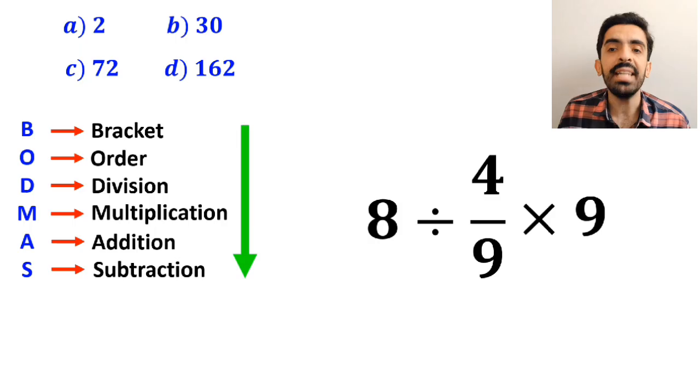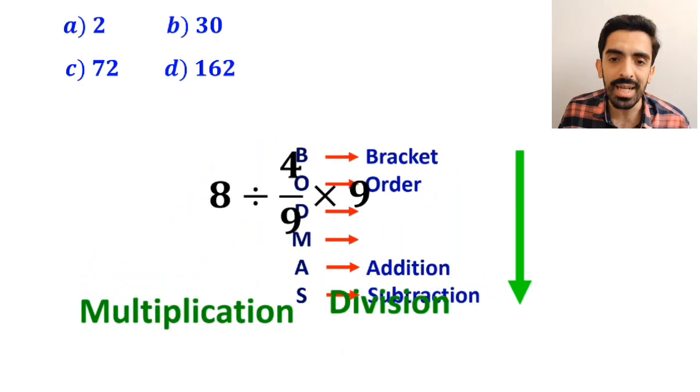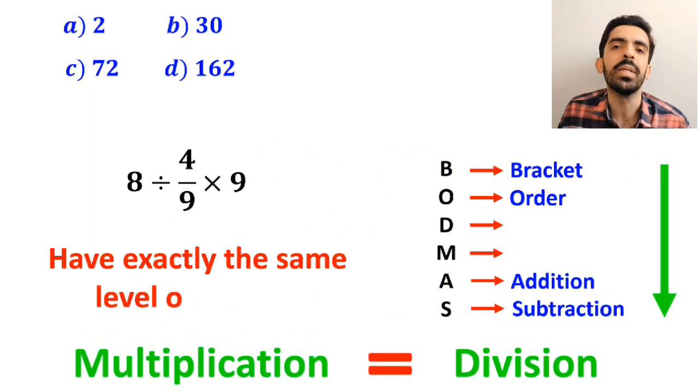In the next step, we handle the division and multiplication. However, it's very important to note that in the BODMAS rule, multiplication and division have exactly the same level of priority.